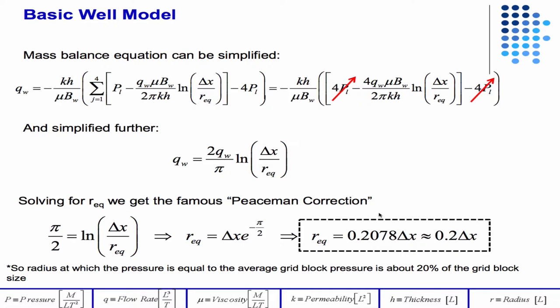Or approximately 0.2 delta X. We always make the assumption that the well is in the center of the grid block. If it's not, you can refine the grid accordingly such that eventually it will be in the center of the grid block. And so this is the so-called Peaceman correction, and really, as a rule of thumb, you can just remember 0.2 times delta X, the Peaceman correction, but that's where it comes from.